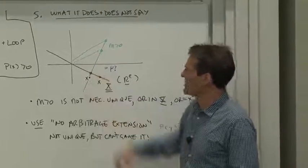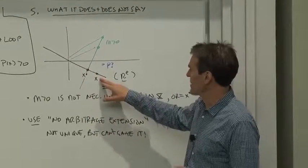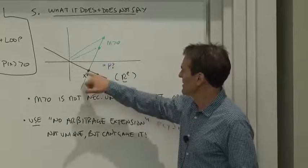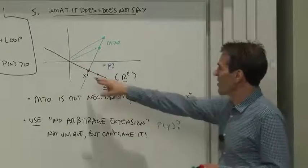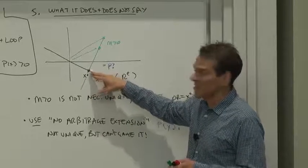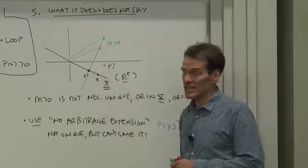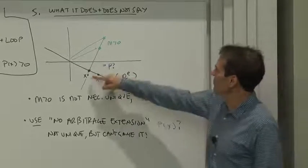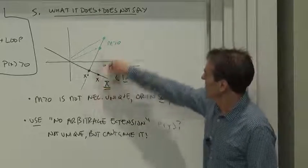Well, what happens in this payoff space? The X star is in that payoff space. There's the unique X star. There's our law of one price discount factor, but that's negative in some states of nature. How do we form a positive one? Well, use our ability to create lots of different discount factors.